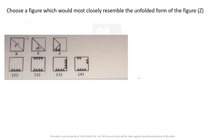Let us answer the very first question: choose a figure which would most closely resemble the unfolded form of figure Z. If you observe, figure Z is over here, but before that we have two figures X and Y, where X is the initial point. So X to Z is one fold and Y to Z is one more fold. Now let me take you to a small concept.